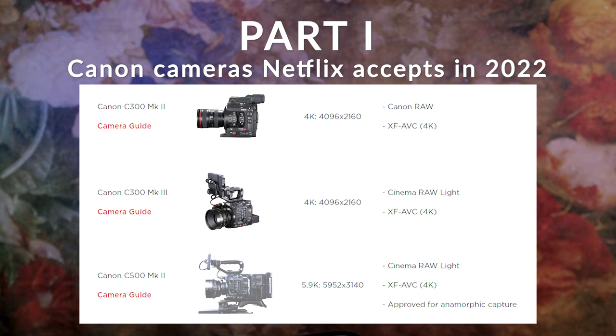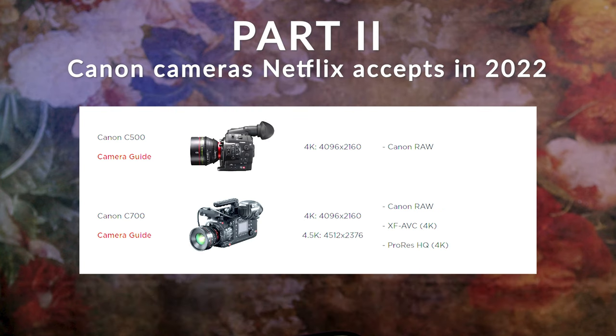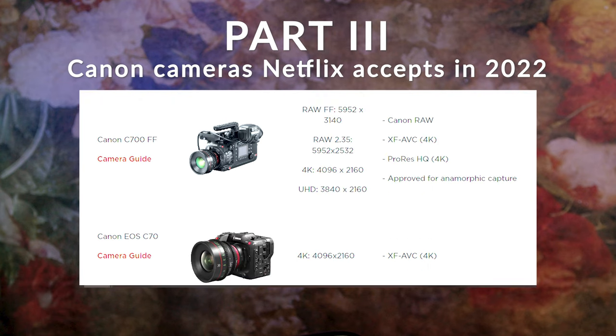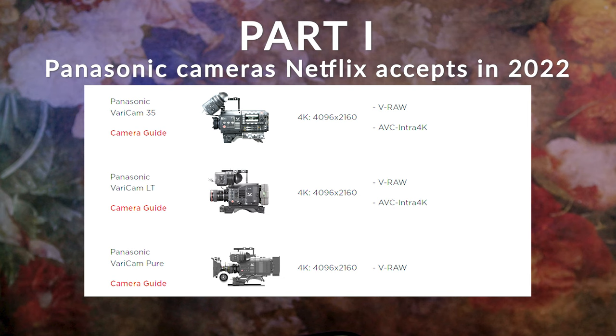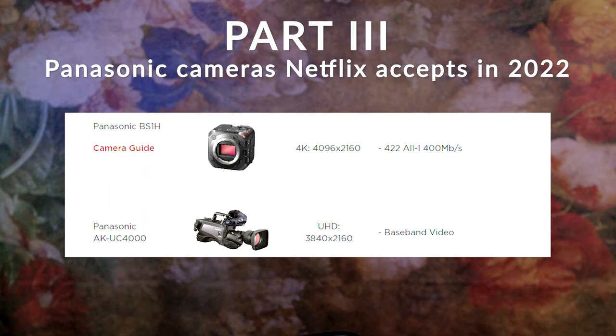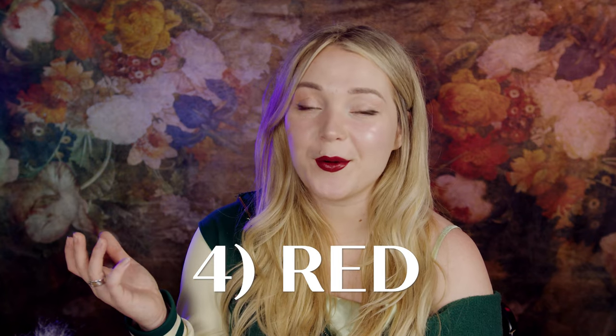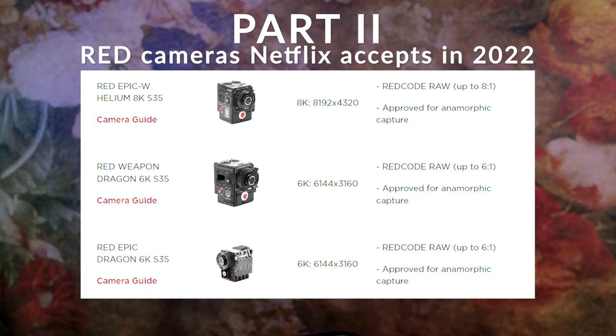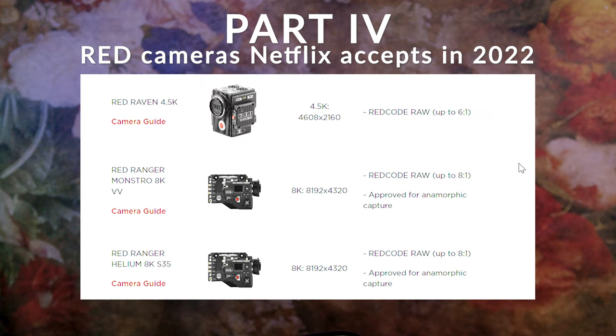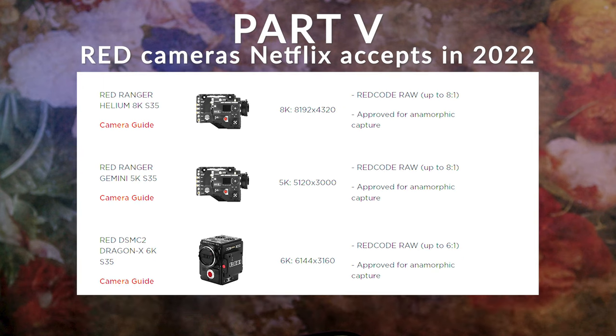Canon — a much more limited selection here. Canon is a beloved brand, but in terms of technical standards there are other cameras that can outrun them a little bit. Panasonic — I've actually discovered a lot of shows I really like lately are shot with Panasonic, so these are the cameras from the Panasonic brand you can use for Netflix. RED camera — surprise surprise, you can have your pick of the litter if you're using a RED camera.